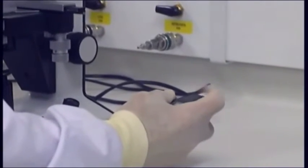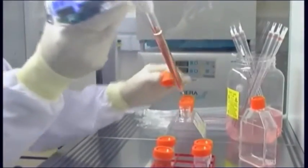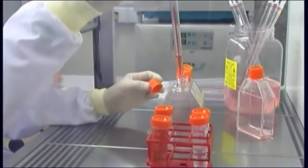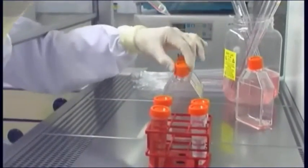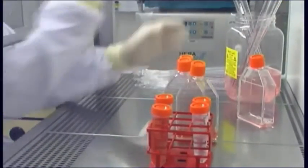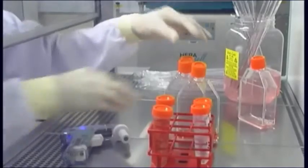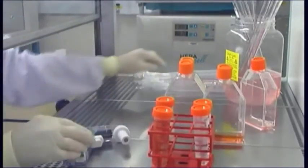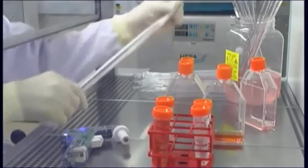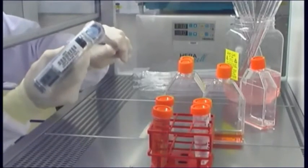Perform a cell count. Add fresh medium to dilute the cells out to the required seeding density. In some cases it may be necessary to centrifuge the cells into a pellet and resuspend the cells in entirely fresh medium. Aliquot into new flasks as required.